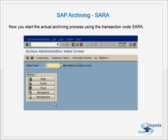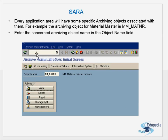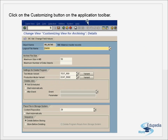The different actions in SARA are: Write, Read, Storage System, and Management. This is the initial screen of archive administration. Every application area has specific archiving objects associated with it. For example, the archiving object for material master is MM_MATBEL. You enter that object name in the object name field.